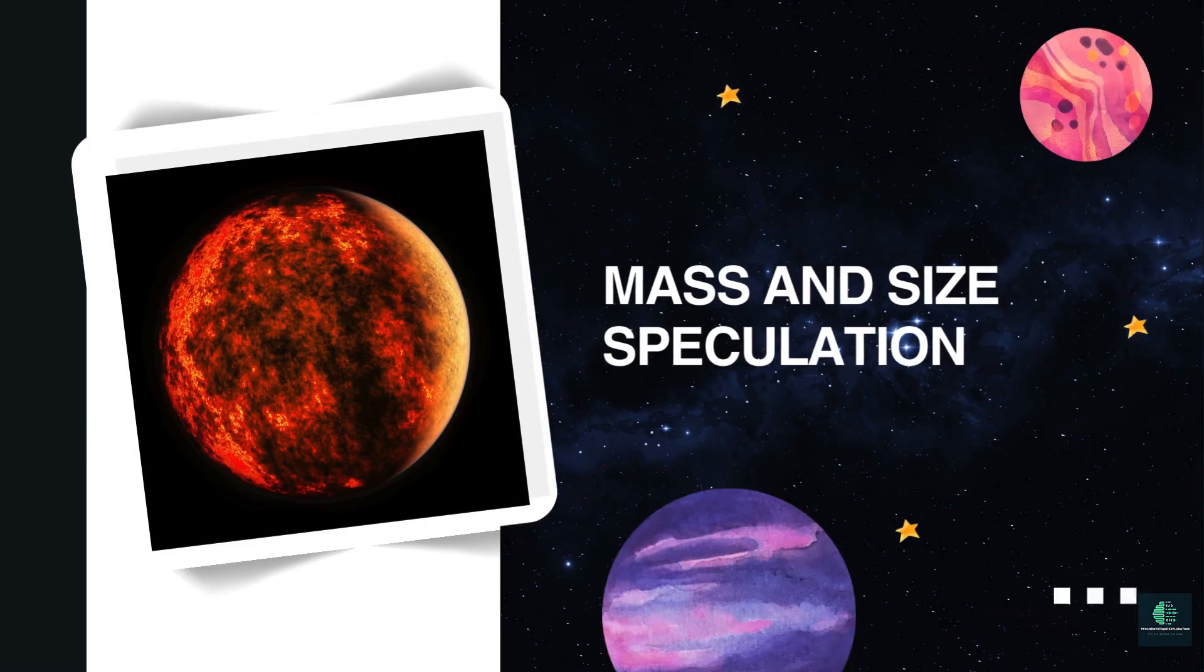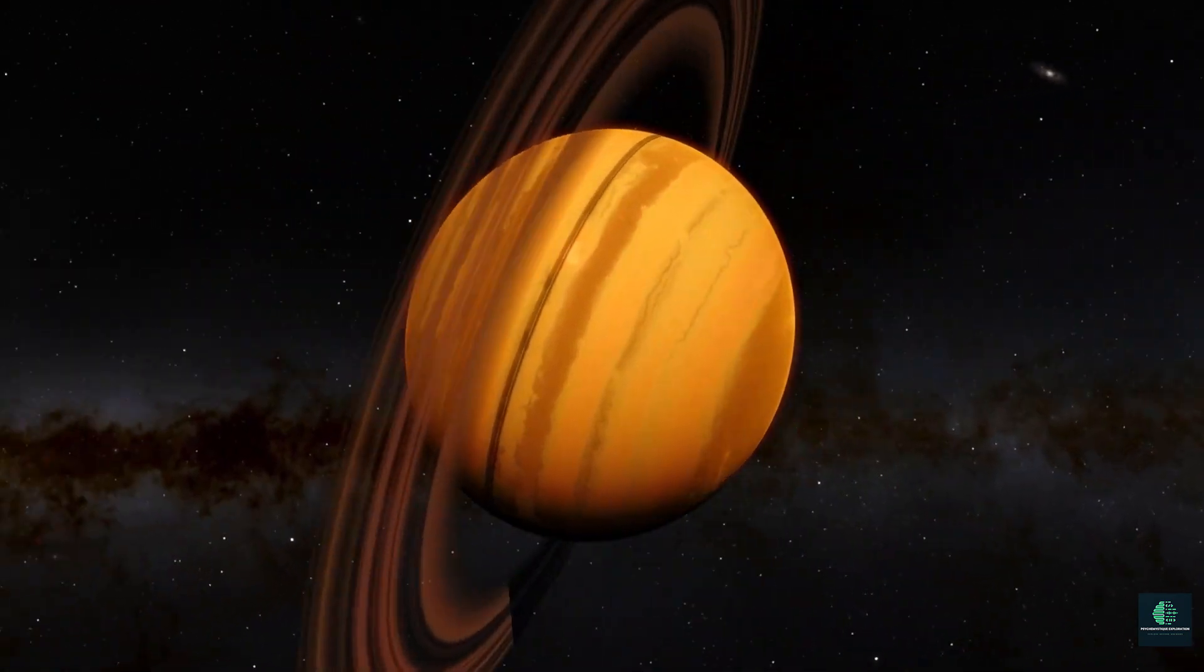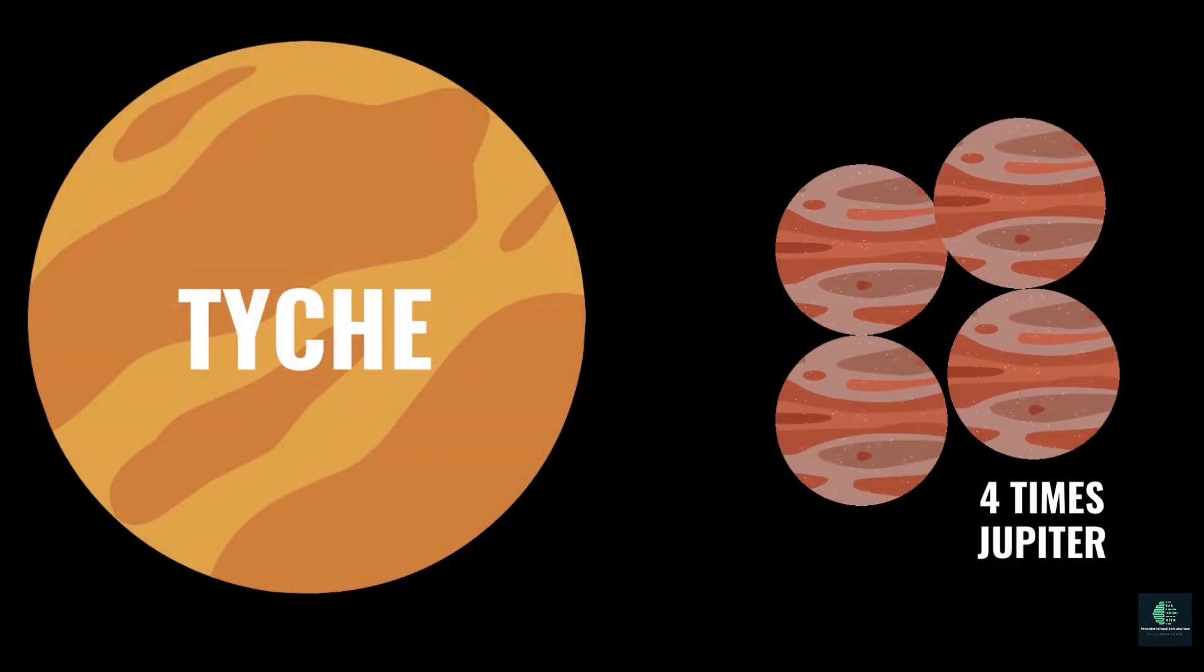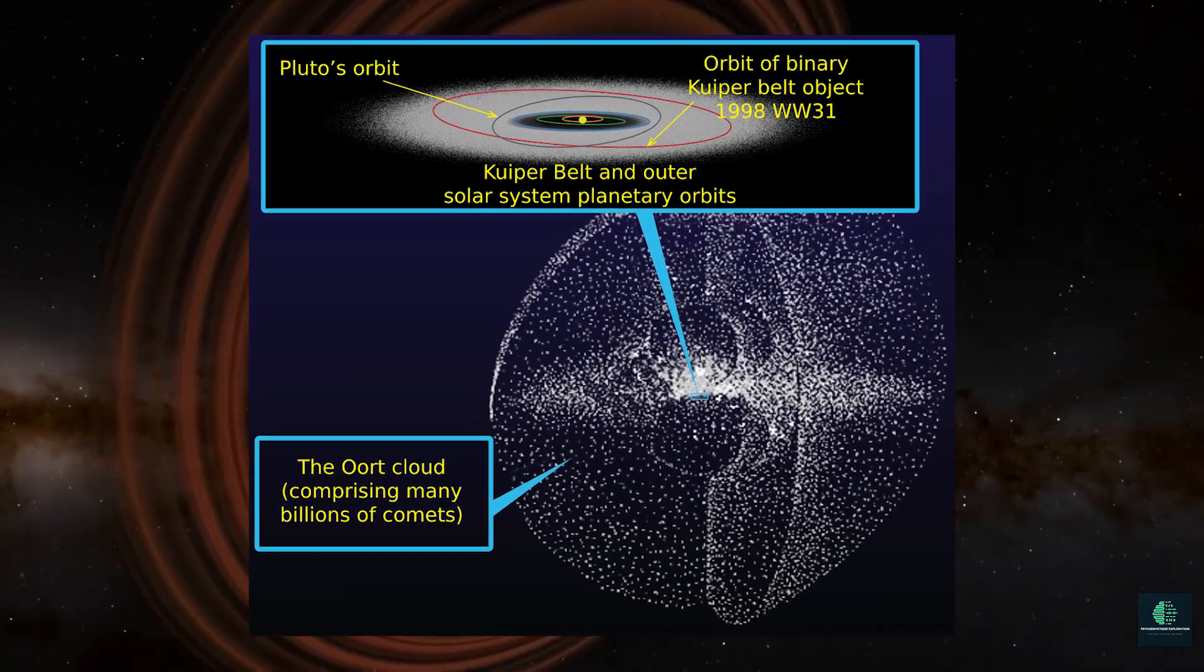Mass and Size Speculation: If Teich exists, it is speculated to be a gas giant, possibly four times the mass of Jupiter. Its large mass could influence the orbits of nearby objects.